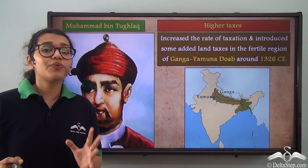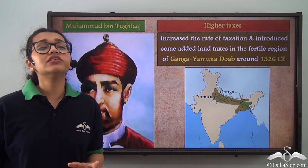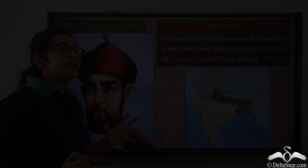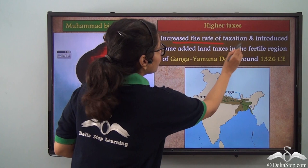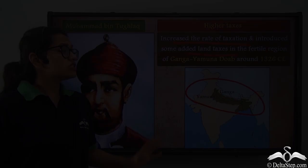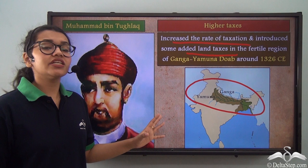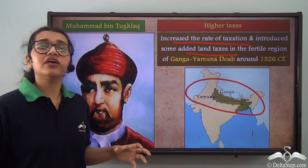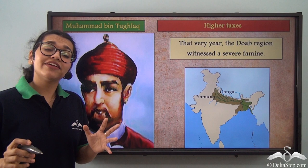Muhammad bin Tughlaq came to power in 1325 CE. The very next year, in 1326 CE, he introduced his first administrative idea: he increased the rate of taxation and introduced added land taxes in the fertile region of the Ganga-Yamuna Doab, which you can see on the map. This was actually a good idea because the area was very fertile, and the aim was to generate more revenue from it.